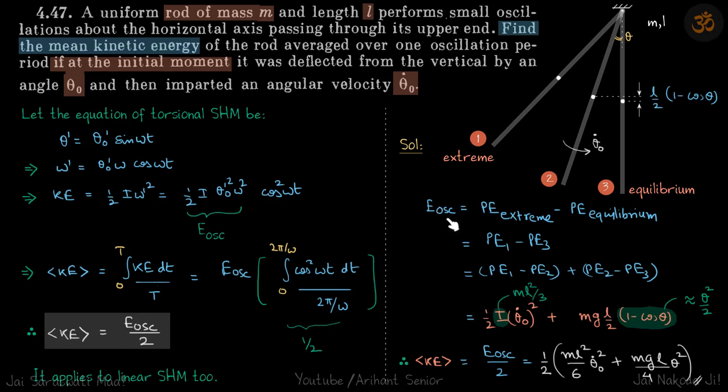Let's find energy of oscillation - that is potential energy of the body at extreme minus potential energy at equilibrium. So this is not the extreme position because the body has some angular velocity, so it will go here and then when it comes down it will go up to a maximum point.